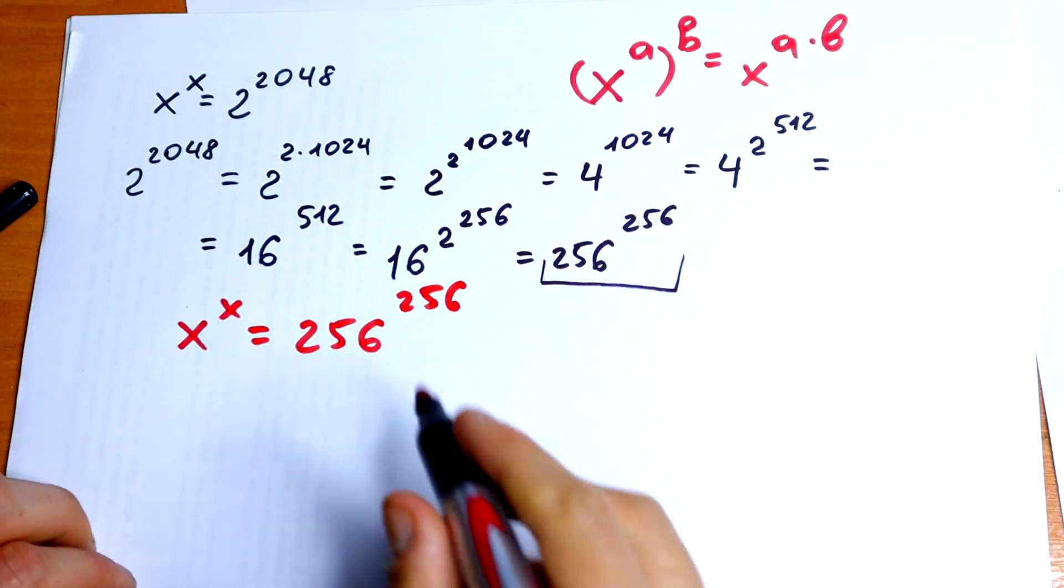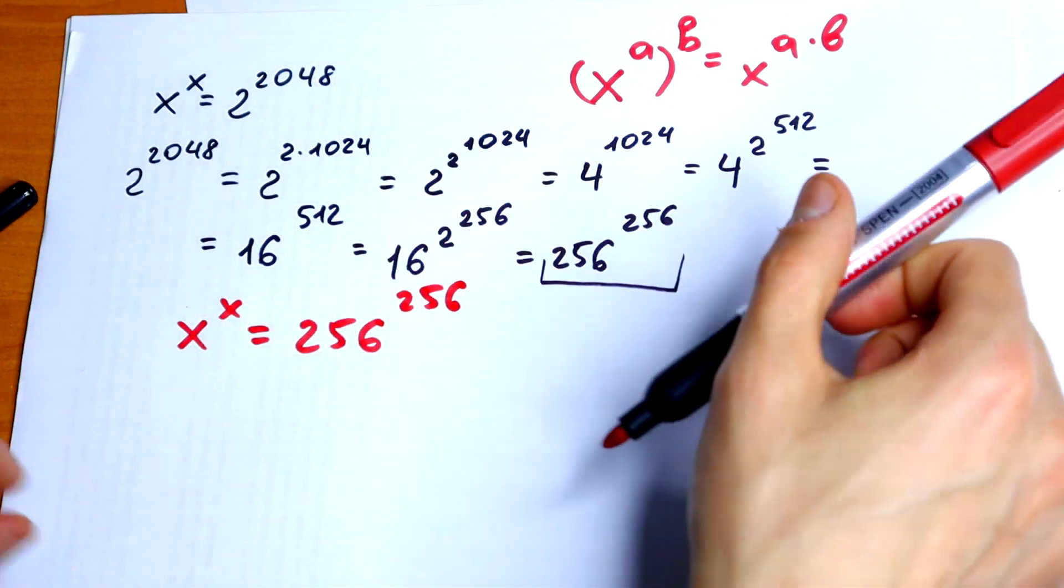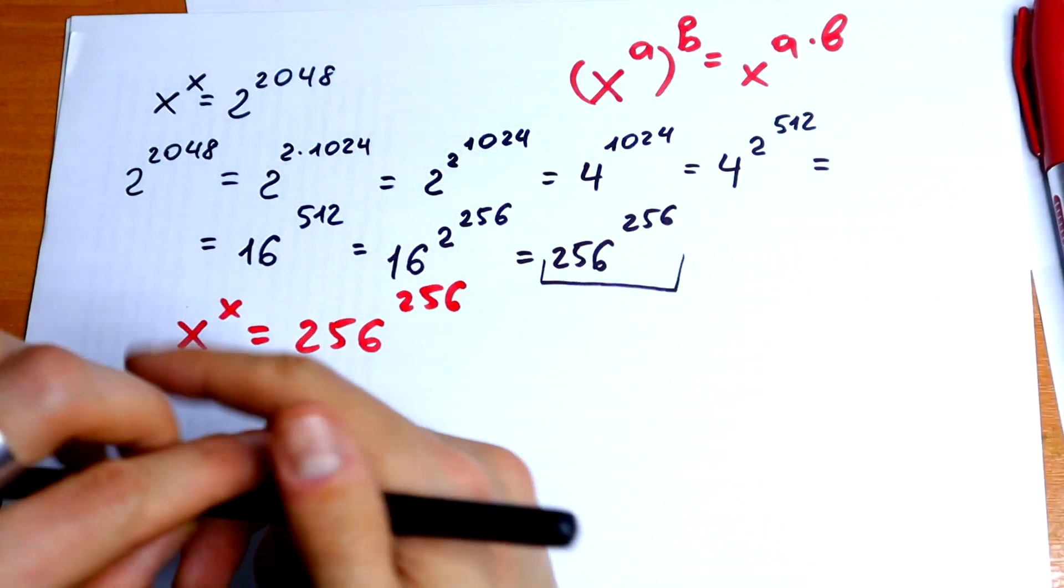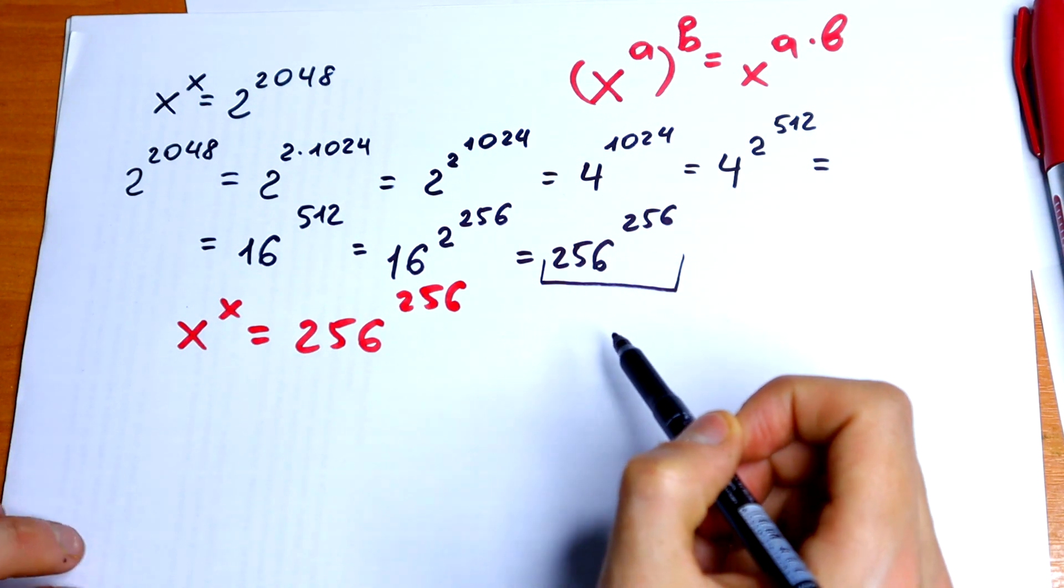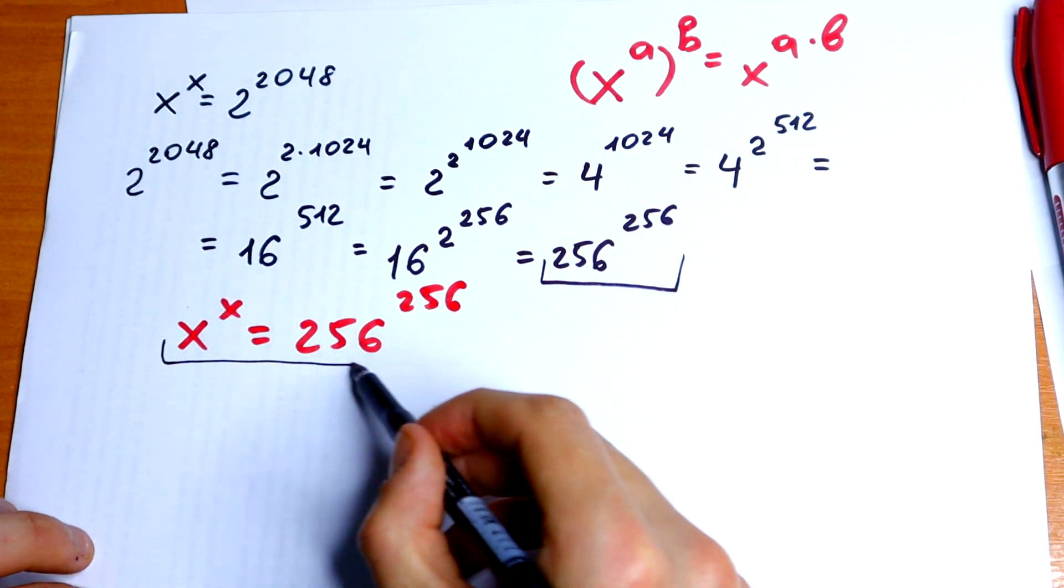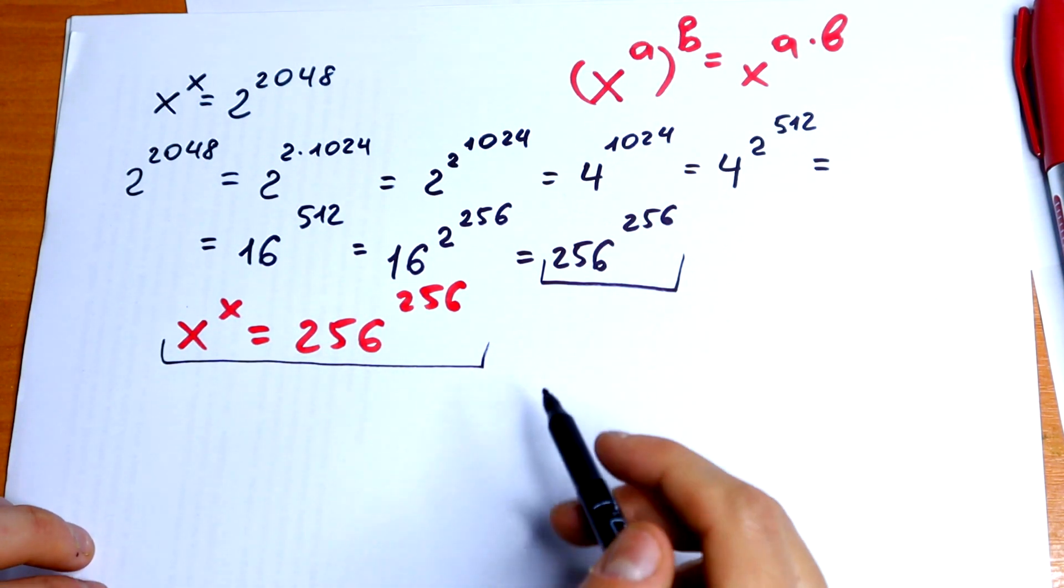So, this is 2 to the 2048 power. We just simplified it a little bit. So, this is our final potential exponential equation.